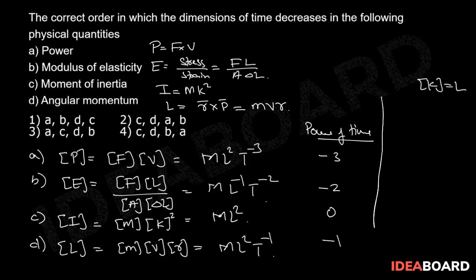If we arrange power of time in descending order, this will be 0 comma minus 1 comma minus 2 comma minus 3.